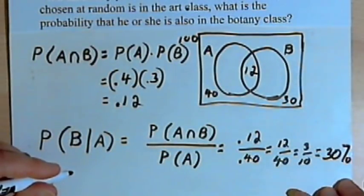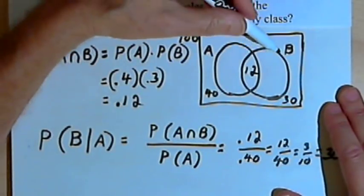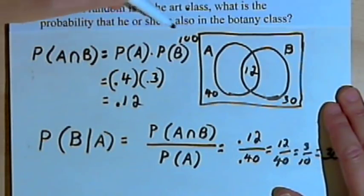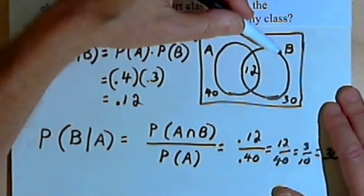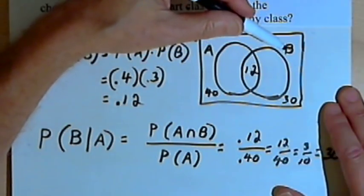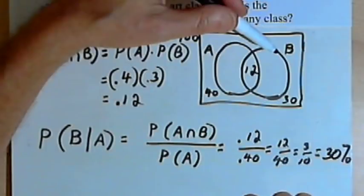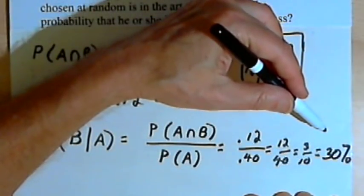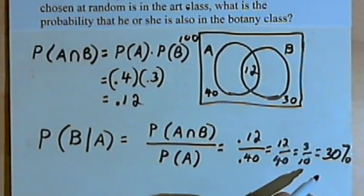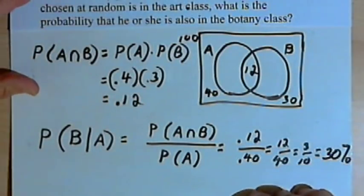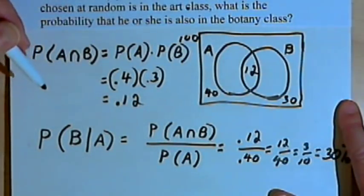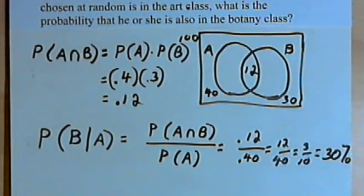This makes sense and is intuitively obvious. The students taking botany were just randomly chosen — it's not like a subset of the art class decided to be in botany. Any student in the whole group of 100 could be in botany, and 30 of them were put in there, which is 30% of the total. So the formula gives us something intuitively obvious here. What I want to do next is go on to another video for something that is not intuitively obvious — where this formula really begins to make sense and becomes very useful. So stick around!